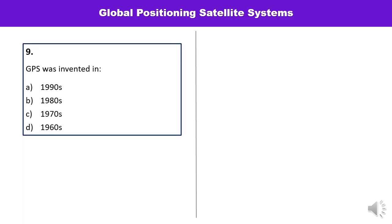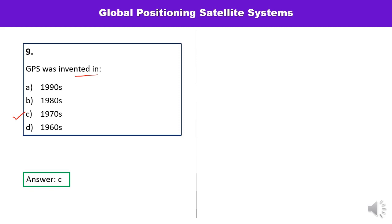Question number nine: GPS was invented in which particular year — 1990s, 80s, 70s, or 60s? In the 1970s GPS was actually invented. That is the correct answer.